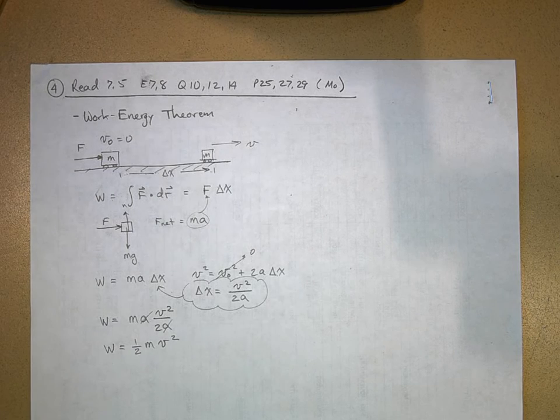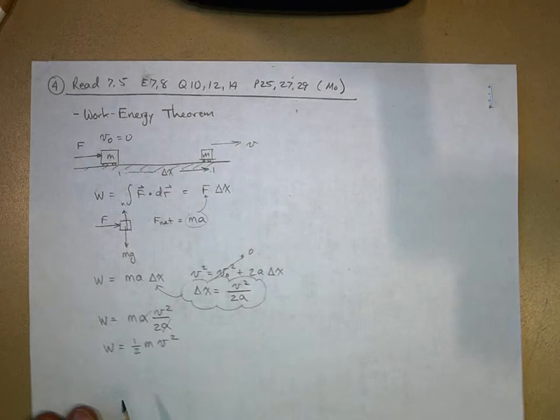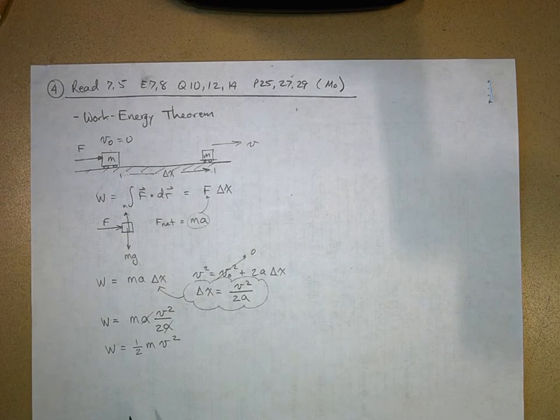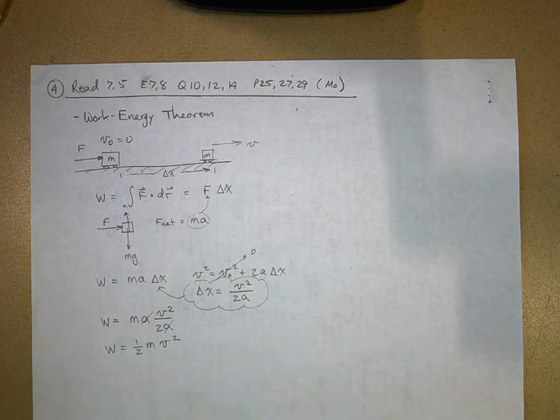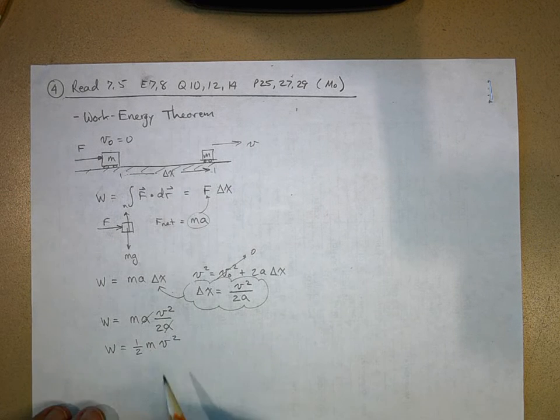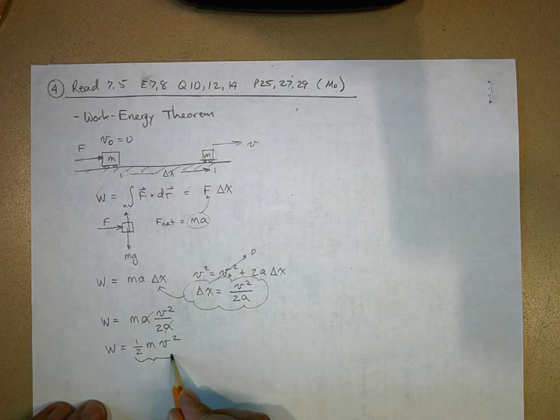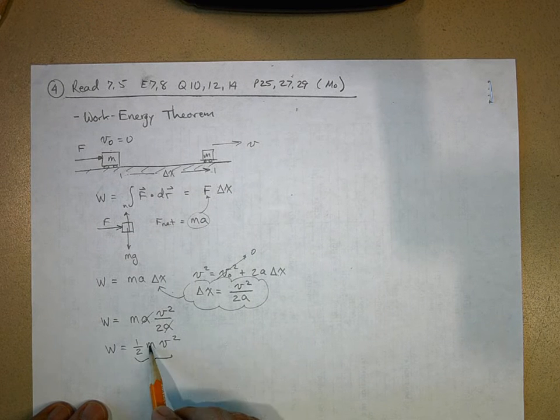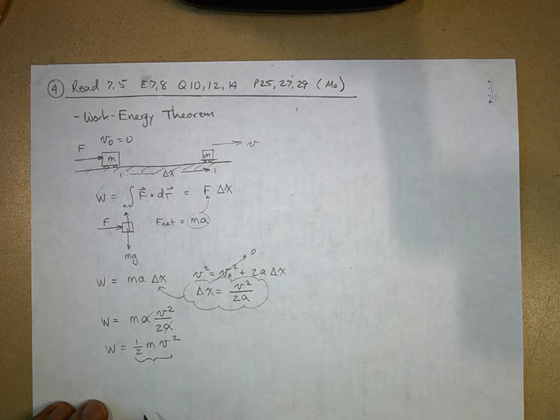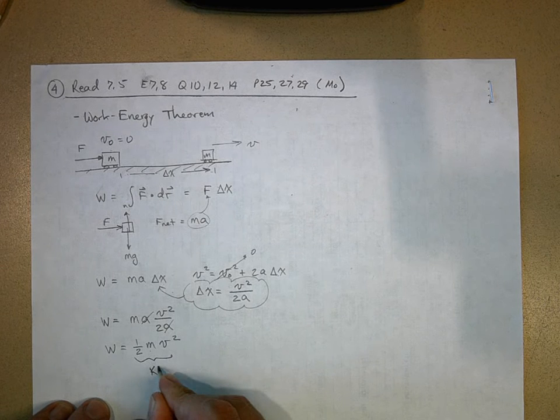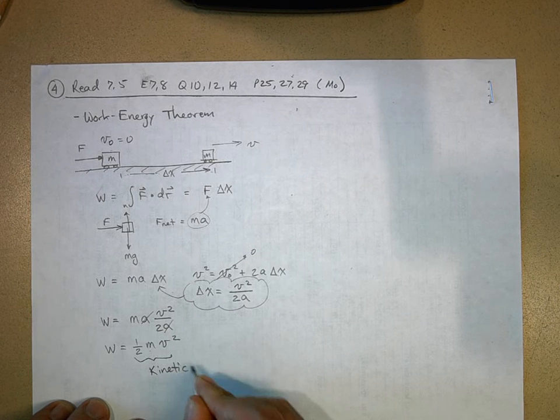So the work done is going to be equal to one half the mass times the velocity squared. Now this is really important. Here, the work done by the net force has caused this massive object to move. We call this quantity right here, the work it took to make that massive object move from rest to this final velocity, we call this kinetic energy.